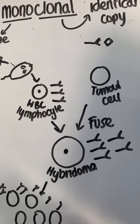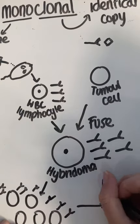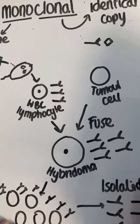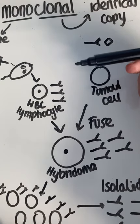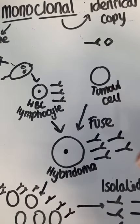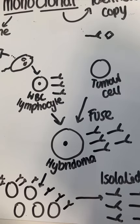These antibodies can then be isolated, giving us lots of clones of that one antibody, all specific to the original antigen we were trying to detect. These can be used for things like binding to cancer cells, drug tests, and pregnancy tests.